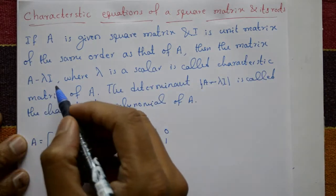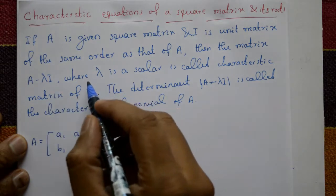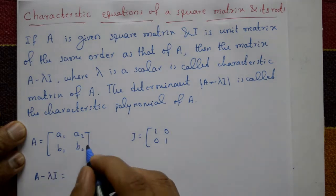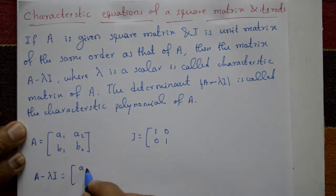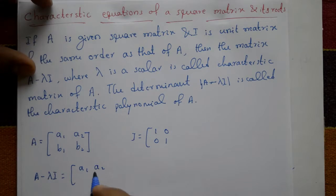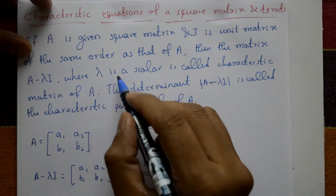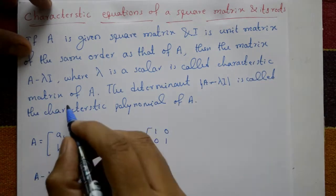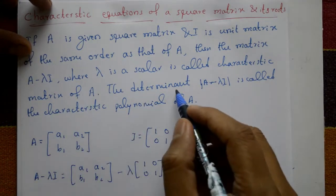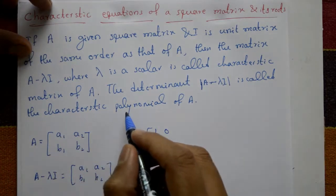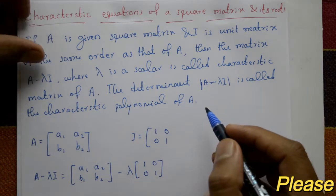The matrix A minus λI, where λ is a scalar, is called the characteristic matrix of A. Specifically, A minus λI equals the matrix [a1, a2; b1, b2] minus λ times [1, 0; 0, 1]. The determinant of this matrix, det(A - λI), is called the characteristic polynomial of A.